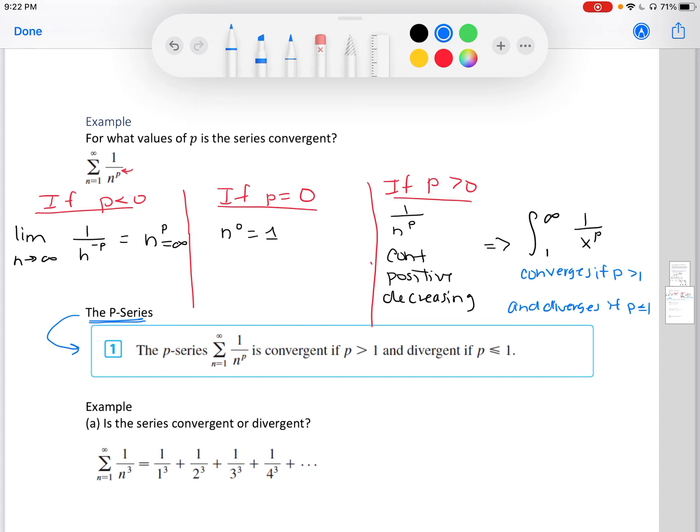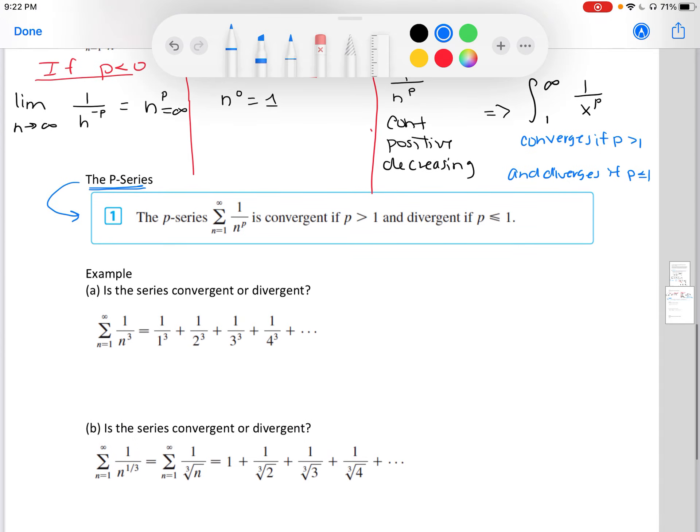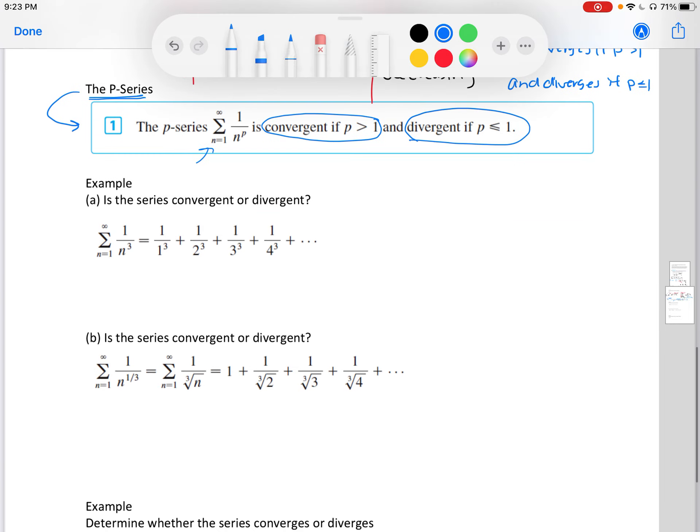Now these three cases lead us to our conclusion, which is called the p-series. So our example is actually the thought process behind this theorem. The p-series: the sum from n equals 1 to infinity of 1 over n to the p is convergent if p is greater than 1 and divergent if p is less than or equal to 1.